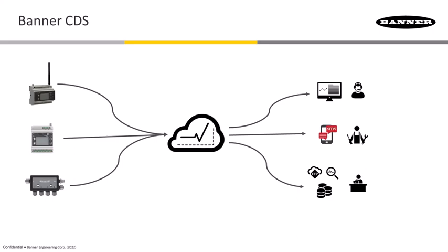Banner CDS requires that the data come from a Banner DXM gateway. That can be one of our wireless controllers, like the DXM 700, or it can be one of our wired snap signal industrial controllers, like the DXM R90.